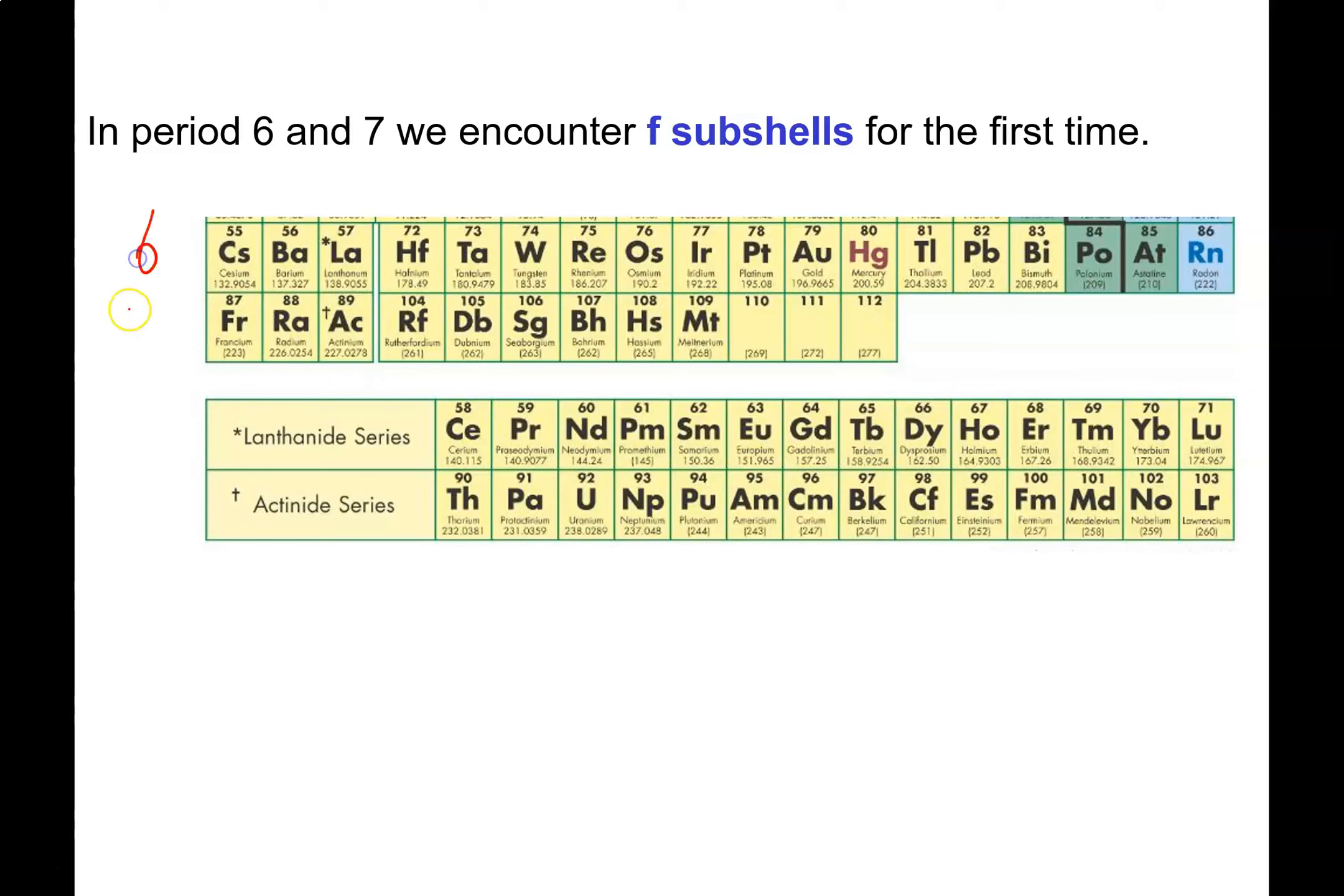Once we get down to periods 6 and 7, we start filling up F subshells for the first time. So that's kind of interesting. The elements that are going to have F electrons are these guys that are in the two rows that sit at the bottom of the periodic table. Remember that they're really meant to be up there, but we just put them underneath for the sake of having a periodic table that fits nicely on the page.